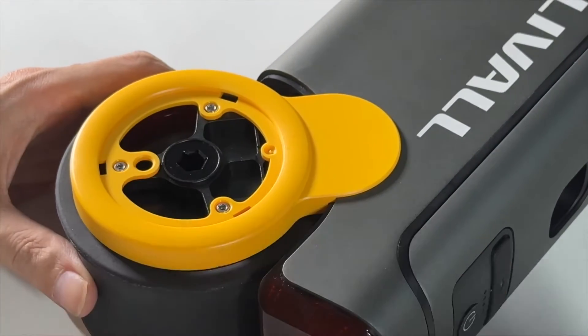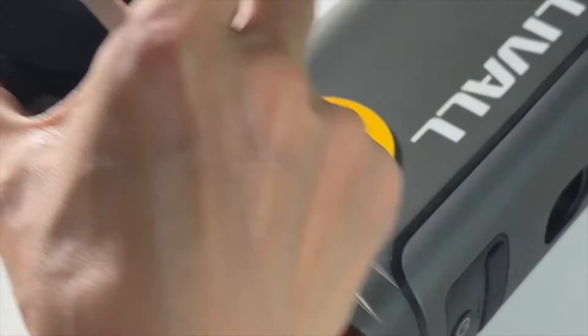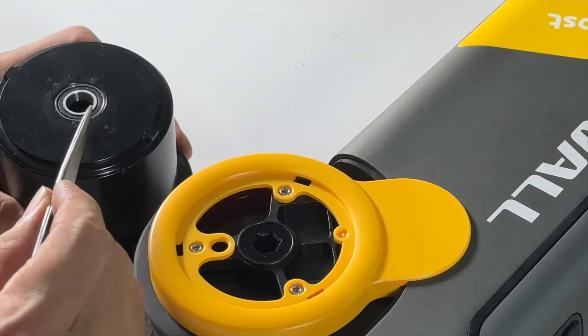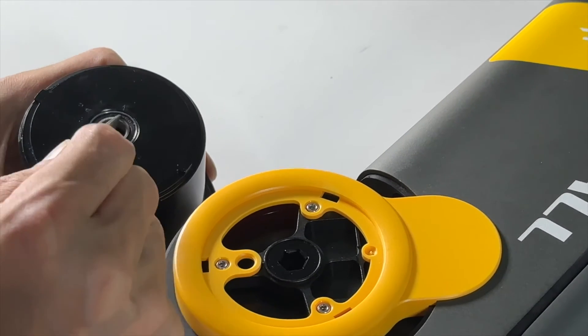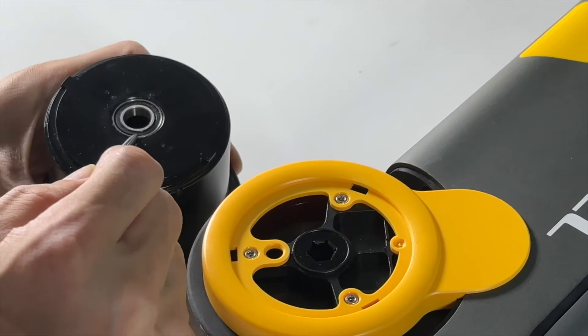Disassembling the left side will not affect the waterproof performance, because there's only one bearing on this side of the motor, and this bearing itself has waterproof capacity.